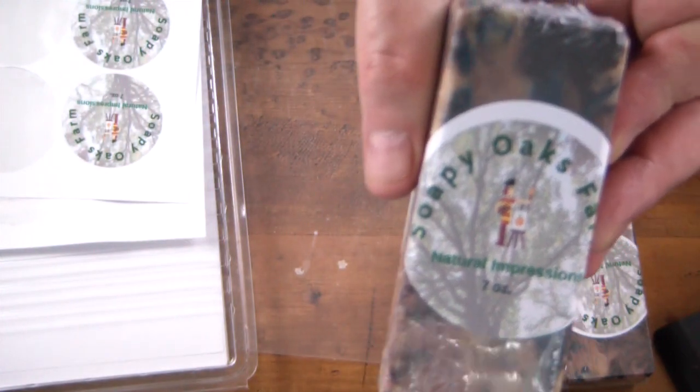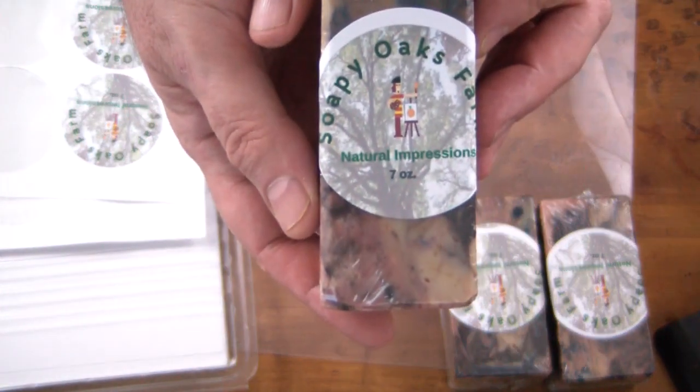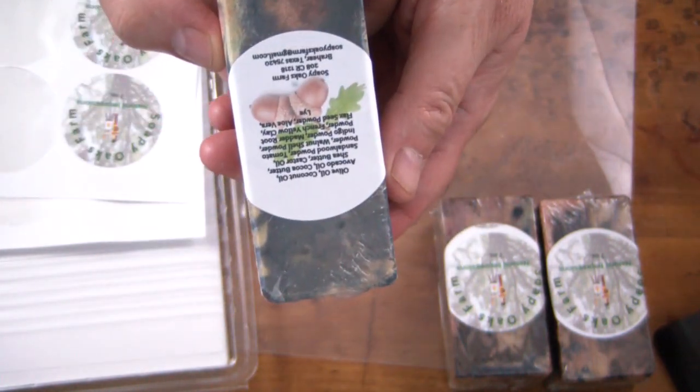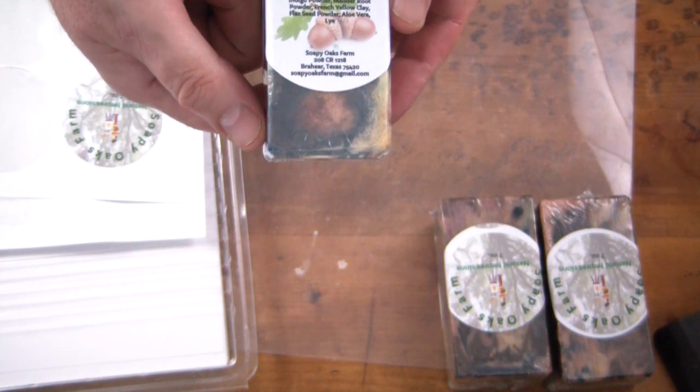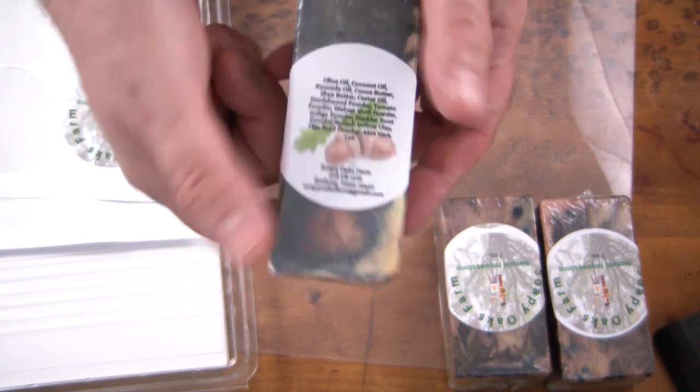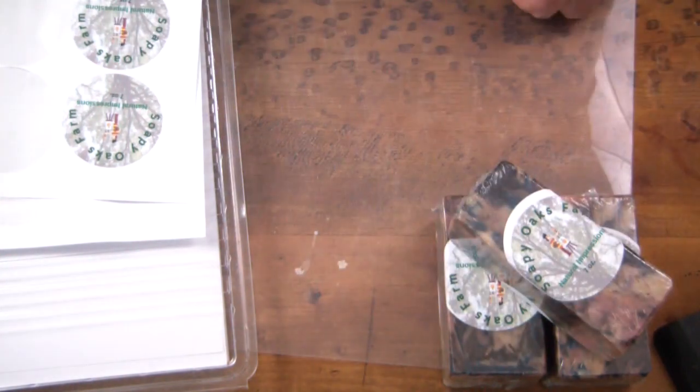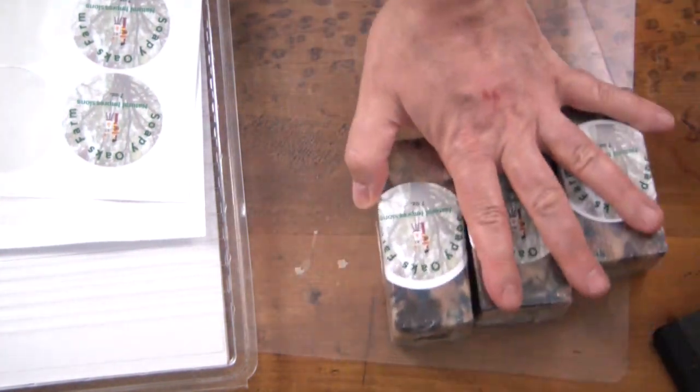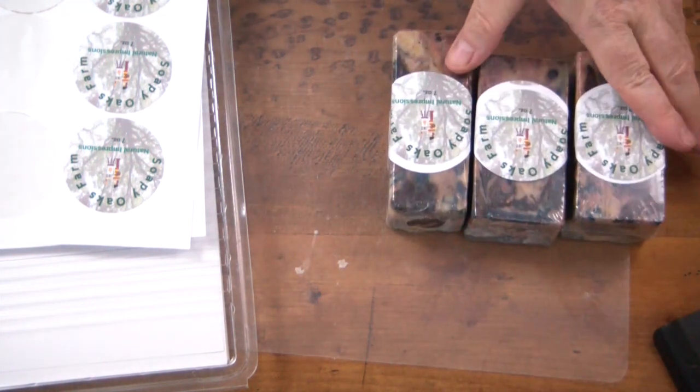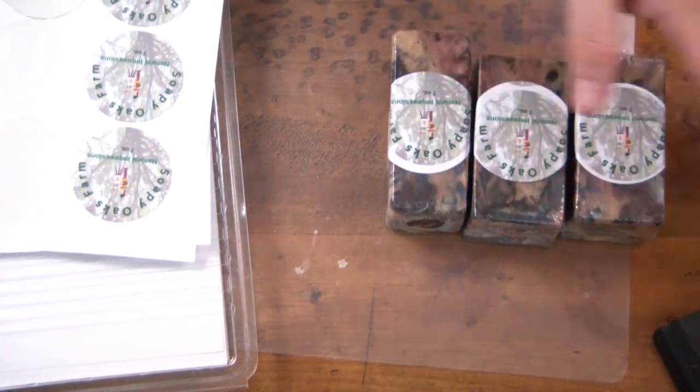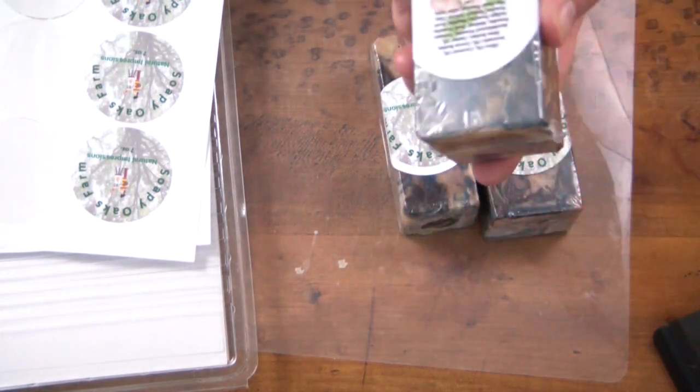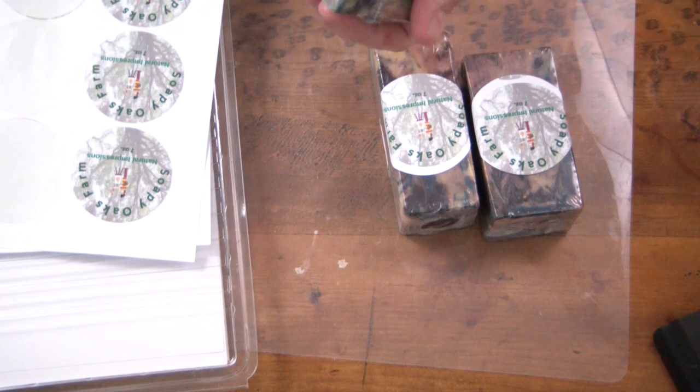So there it is. See the little artist guy painting on his easel? Silly, right? Then on the back there are the ingredients and the address information. See the little acorns from my Soapy Oaks? So that's it, folks. I appreciate you stopping by. If you have any questions, let me know. Leave a comment, like and subscribe if you haven't already. Have a great day, goodbye.